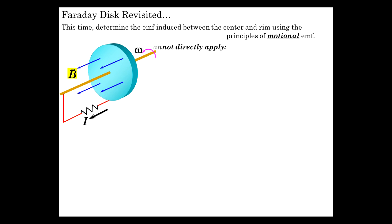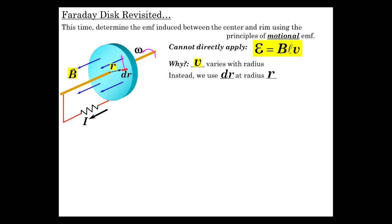One more time, let's look at this Faraday disk again, this time considering the principles of motional EMF to determine the EMF induced between the center and the edge. We can't directly apply the B L V idea, EMF equals B L V, even though we do have a length, because the velocity varies with radius. We have to use dR at radius R, which has a given V. Here's little radius R and our differential, and that particular dR is moving at V.